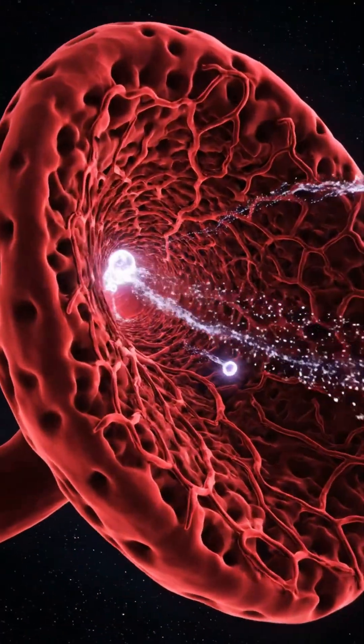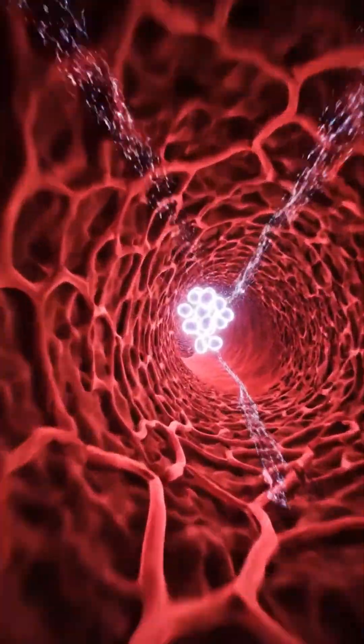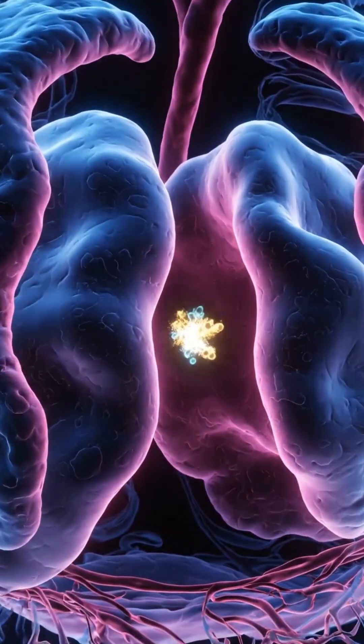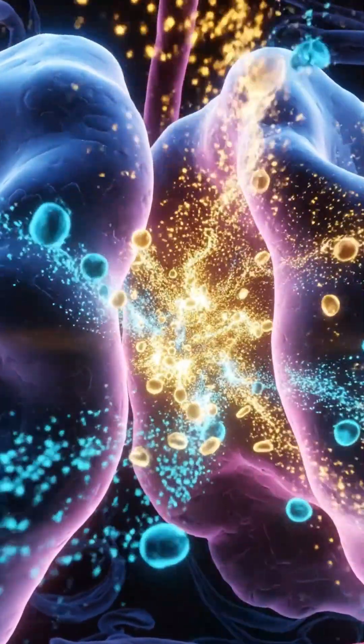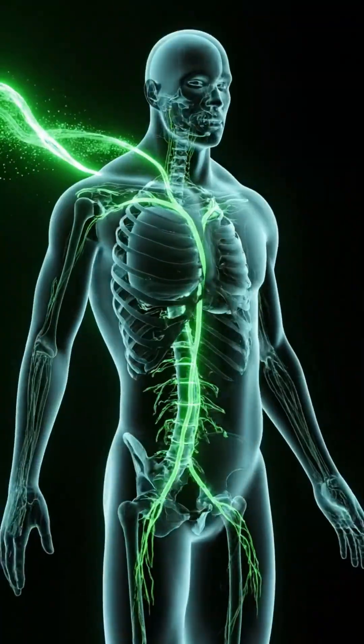The spleen scans blood like a vigilant sentry, removing debris and training immune cells to recognize friend from foe. The thymus and tonsils shape immune identity. The thymus trains T-cells while tonsils guard the gateways of the throat.